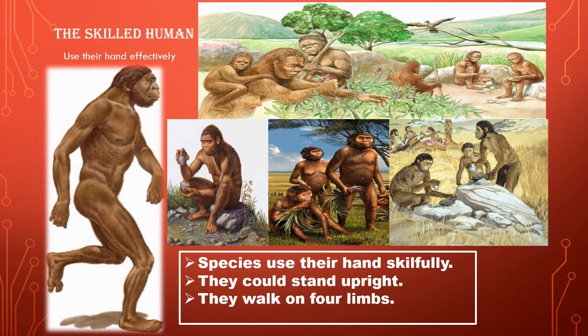The skilled human - the species of human who could use the hands skillfully is known as the skilled human. These species use their hands skillfully as they are able to use both their hands and legs. They are also able to perform many activities and can do much more than any other animals. That is why they were said to be the skilled human.